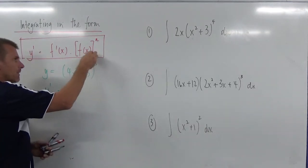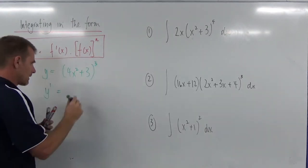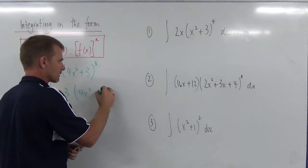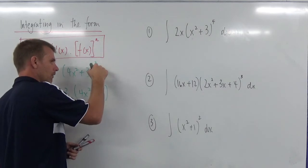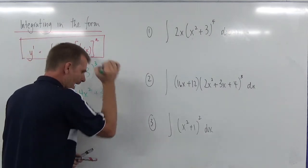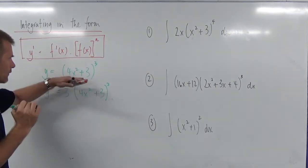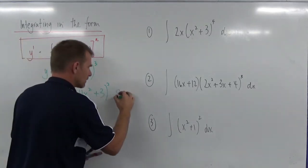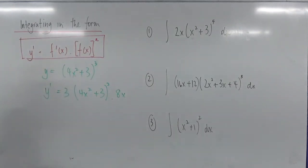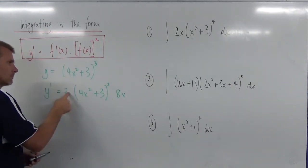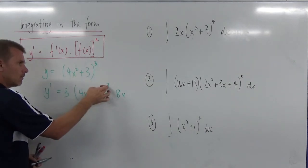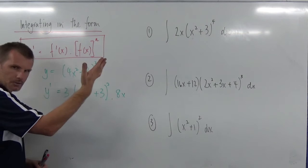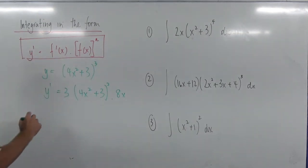Because this is chain rule, I've got to take the power out the front — that would be a 3 up front — multiplied by (4x² + 3), lower the power by 1, and multiply by the derivative of the inside, which would be 8x. So that's times 8x. Take the power out the front, lower the power by 1, multiply by the derivative of the inside — this part cancels out.